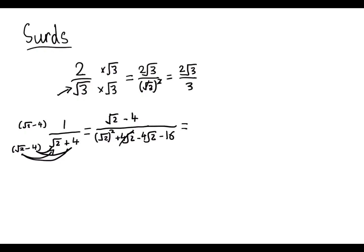As you can see, these four root twos are going to cancel each other out. And like we said before, root two squared is just two. So we have root two minus four over two minus 16, minus 14. Now we can simplify this, multiply top and bottom by minus one, make it look a bit nicer. So we're left with four minus root two over 14.